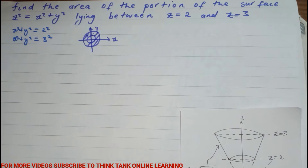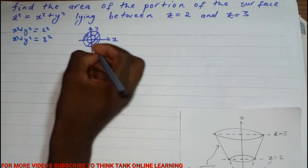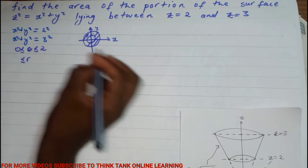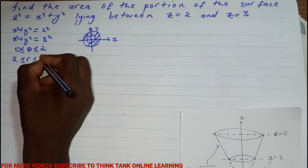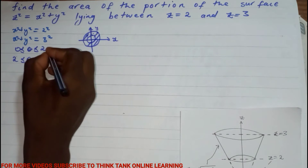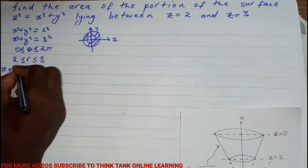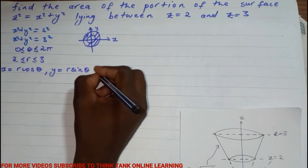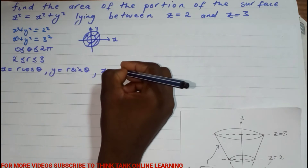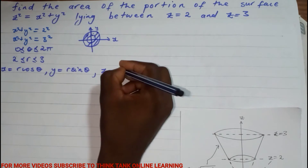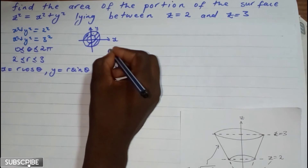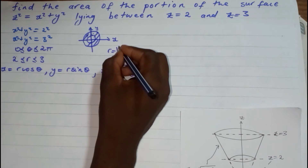I'm going to choose two parameters: r and θ. Since θ is the angle, θ ranges from 0 to 2π. r is the radius and ranges from 2 to 3. So I'm going to say x = r·cosθ, y = r·sinθ, and z = √(x² + y²). Since r = √(x² + y²), this simplifies to z = r.